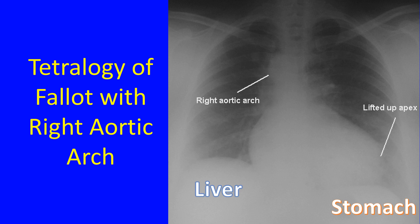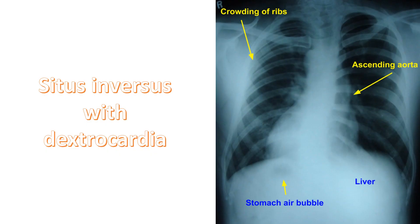In both these cases, the visceral situs is solitus, as the stomach air bubble is on the left side and liver shadow on the right side. Abnormalities in situs can be situs inversus and situs ambiguous. Viscero-atrial situs refers to the position of the atria in relation to stomach, spleen, liver, and bronchi.